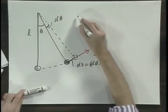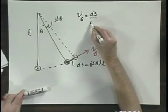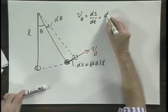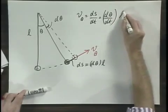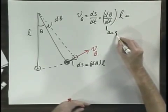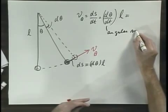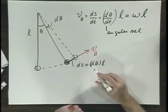So this velocity v theta, which is dS dt, becomes d theta dt times L. And this d theta dt, which is the angular velocity, is often called omega. And so this is omega L.